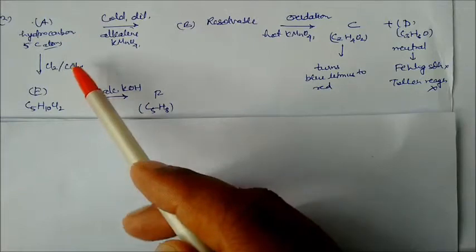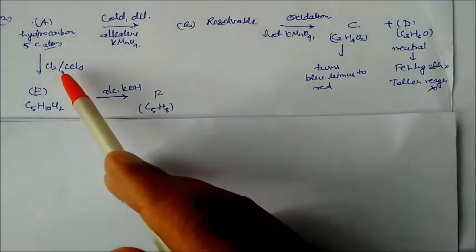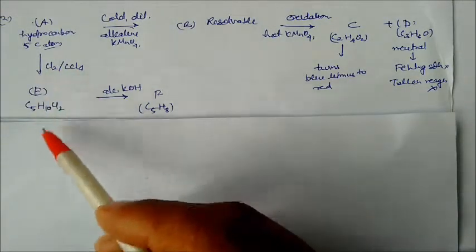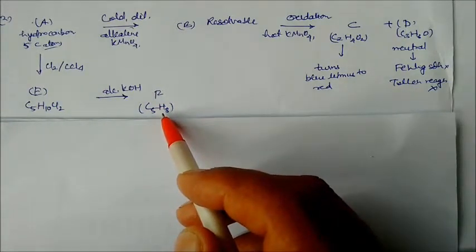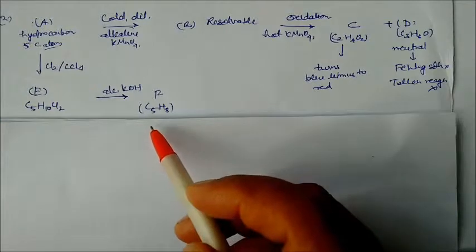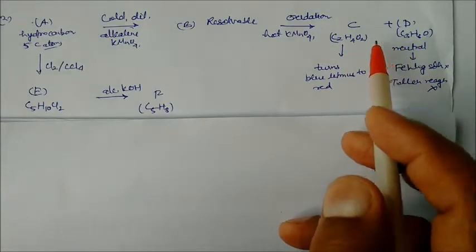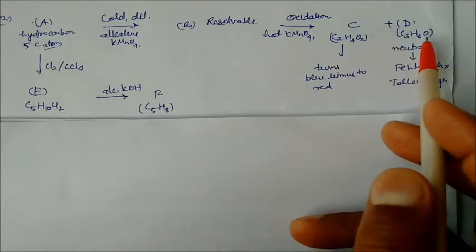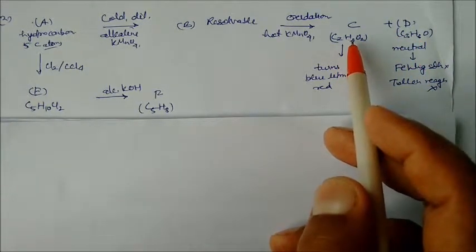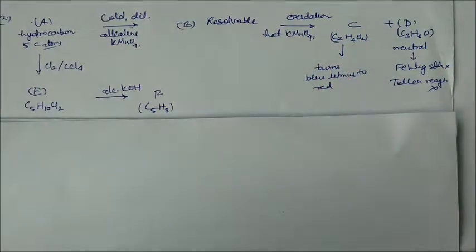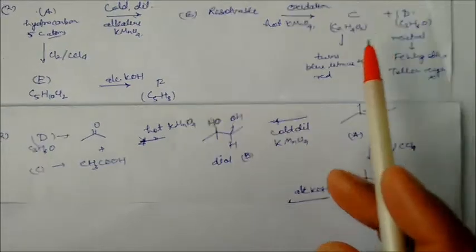Compound A with five carbon atoms reacts with Cl2 in CCl4 giving E, which is an alkene with Cl2 — addition reaction takes place. On dehydrogenation the product C5H8 is obtained. So C and D must be acetone and acetic acid respectively.